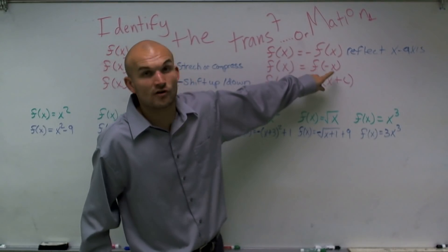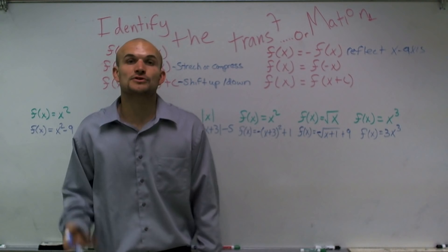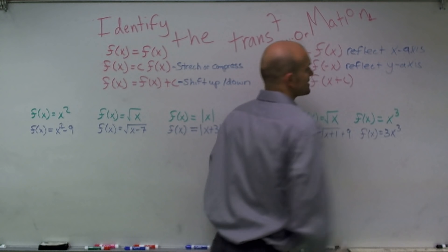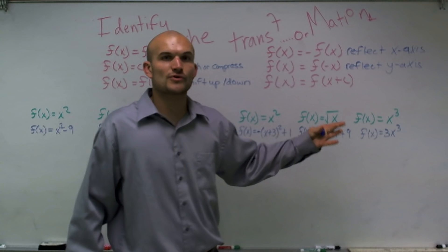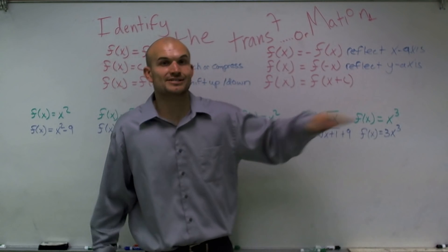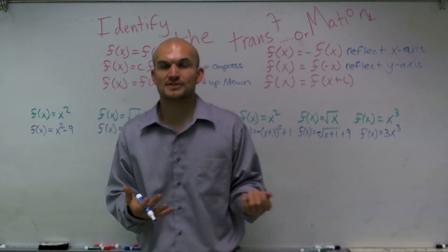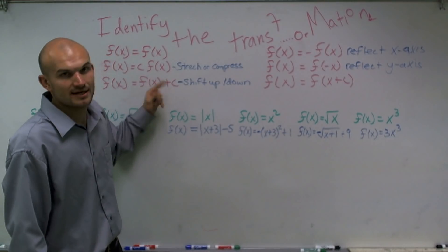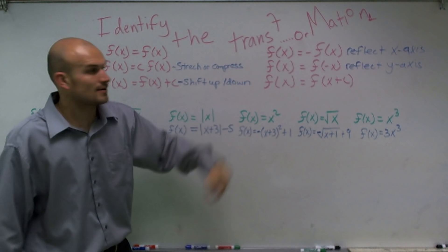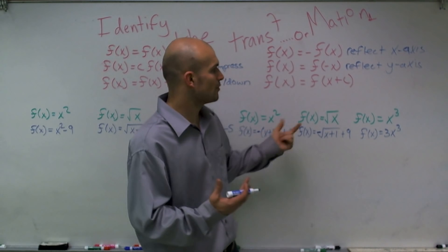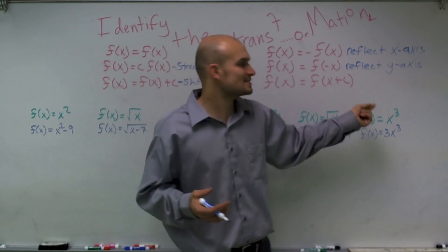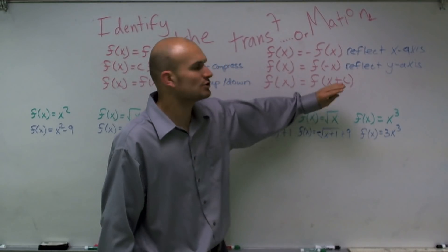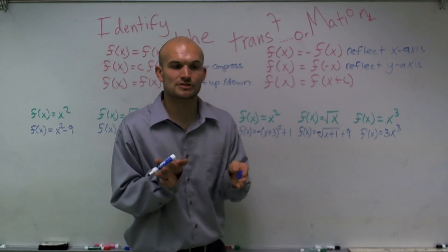If I have a negative version of x inside my function, that's going to reflect over the y-axis. The last transformation: in most standard forms you'll see x minus h inside the function. It's usually the opposite direction inside — so f of x plus c outside means positive c shifts up, but x plus c inside the function means the graph actually shifts left. X minus c inside shifts right. We'll go through examples of all of these.